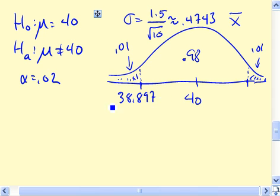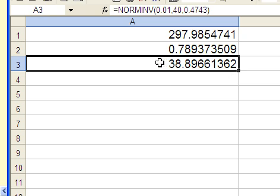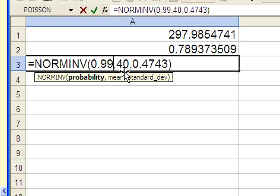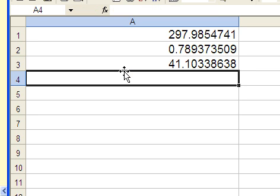So if our sample mean is less than this number, we'd reject H0. On the other hand, if it's bigger, it can't be too much bigger. Specifically, we're not going to reject H0 until we hit this value up here. We could get this in a couple ways. One way is to go back to Excel. The area to the left of this line is 0.99. We could just go back to our previous entry here and just change the 0.01 to 0.99, and this time we get 41.103.